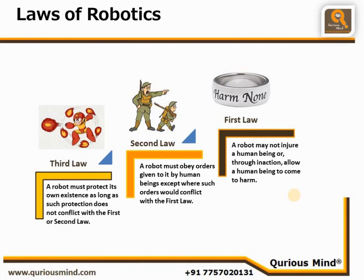The last statements in Law 2 and Law 3 are important and show that the laws are hierarchical. If there is a chance of conflict with a higher positioned law, then the lower positioned law will not be followed.